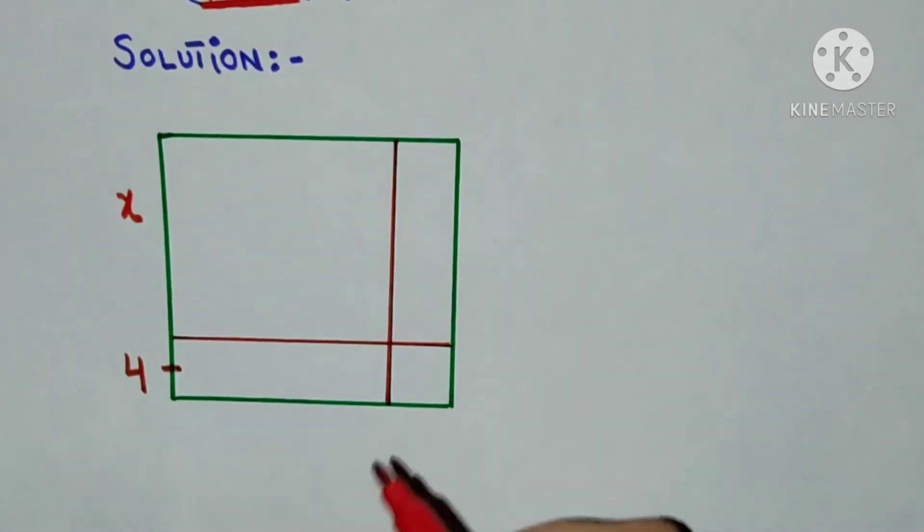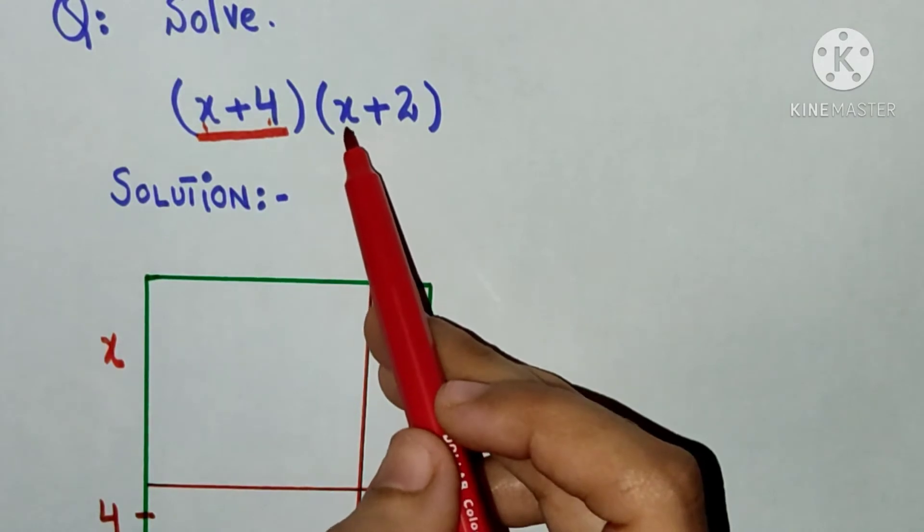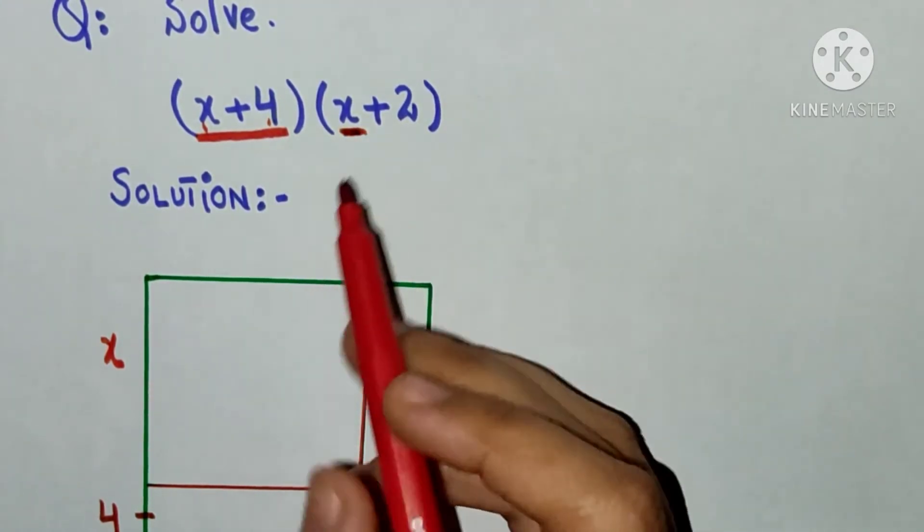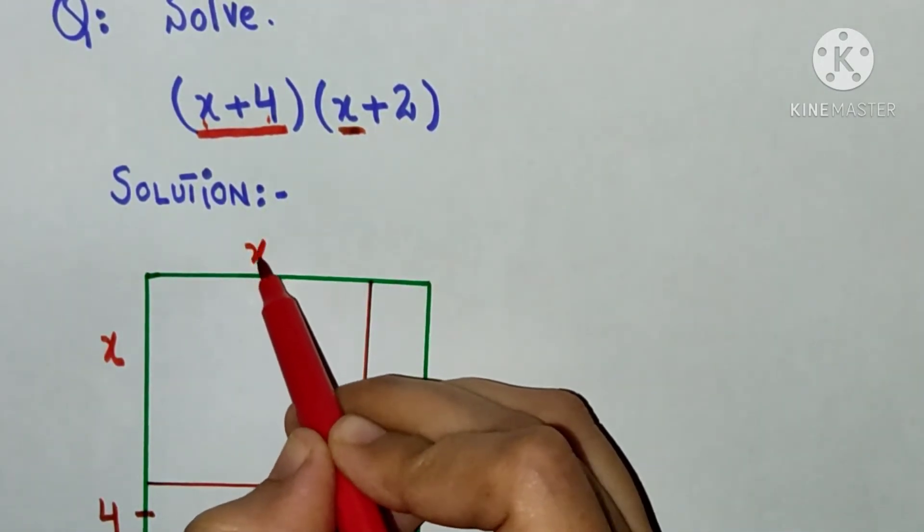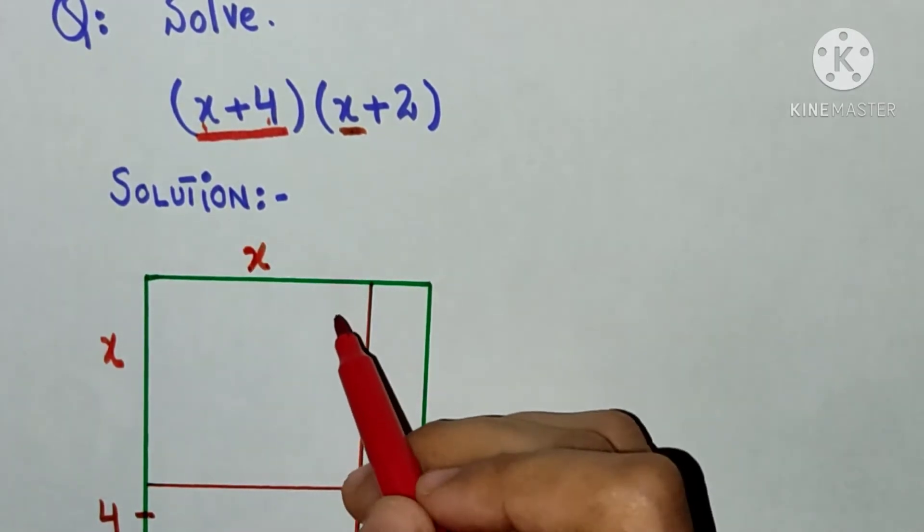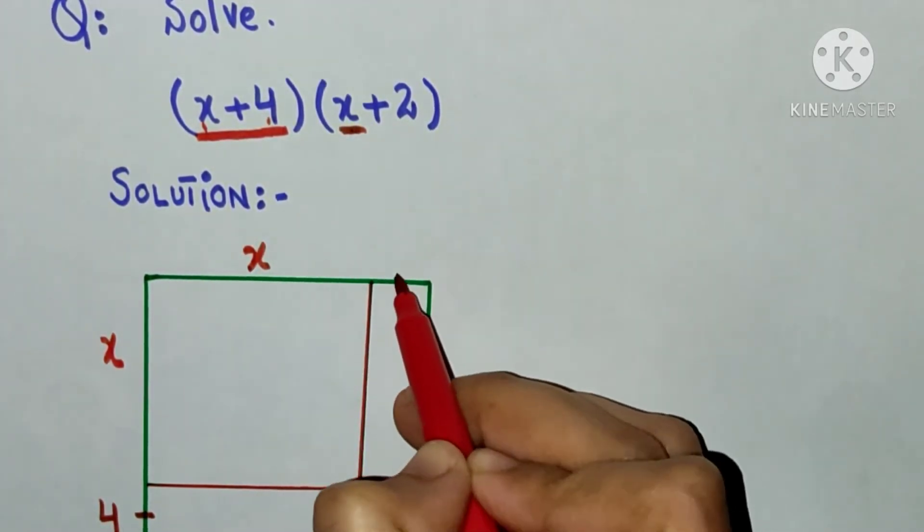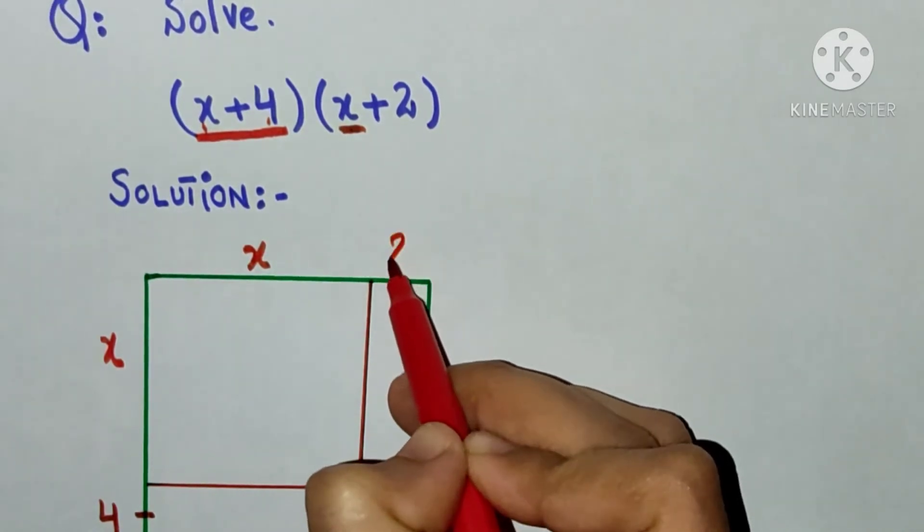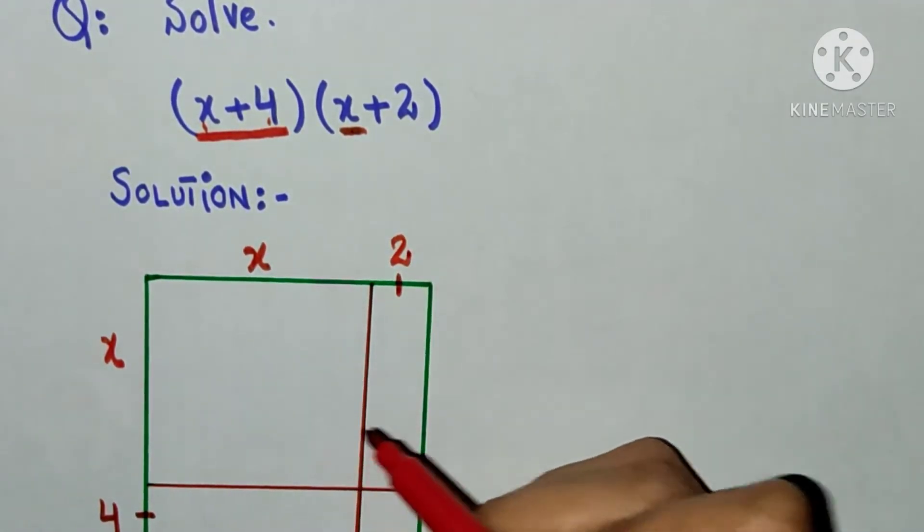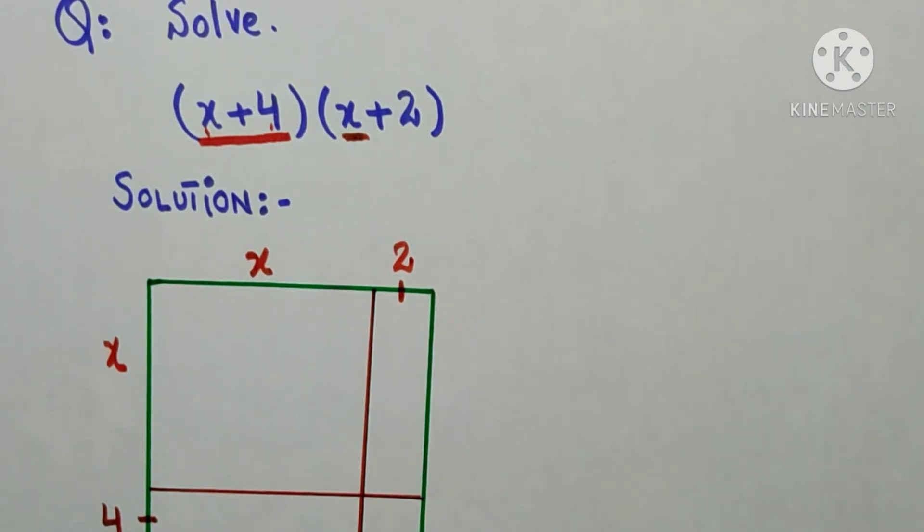Now what I will do is I will write first x here on the top outside this bar, outside the square, and the 2 here in this bar outside this bar. Done.